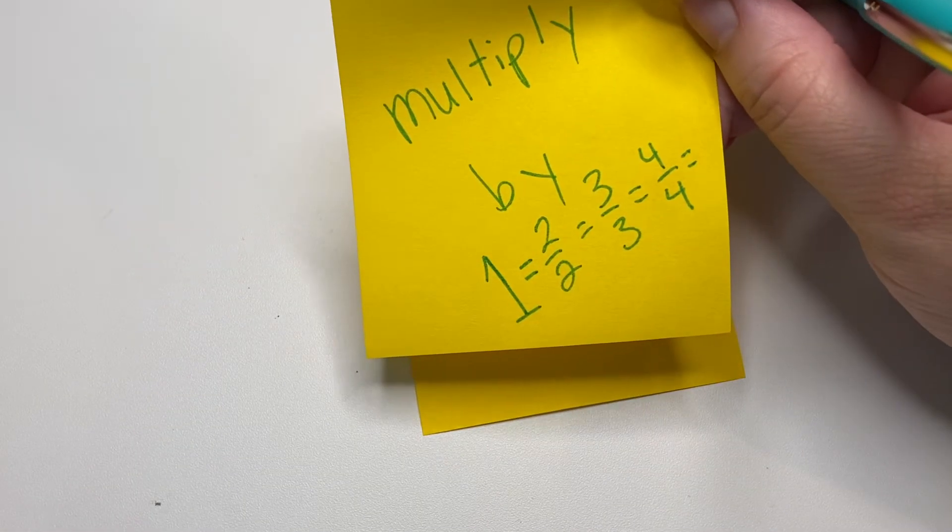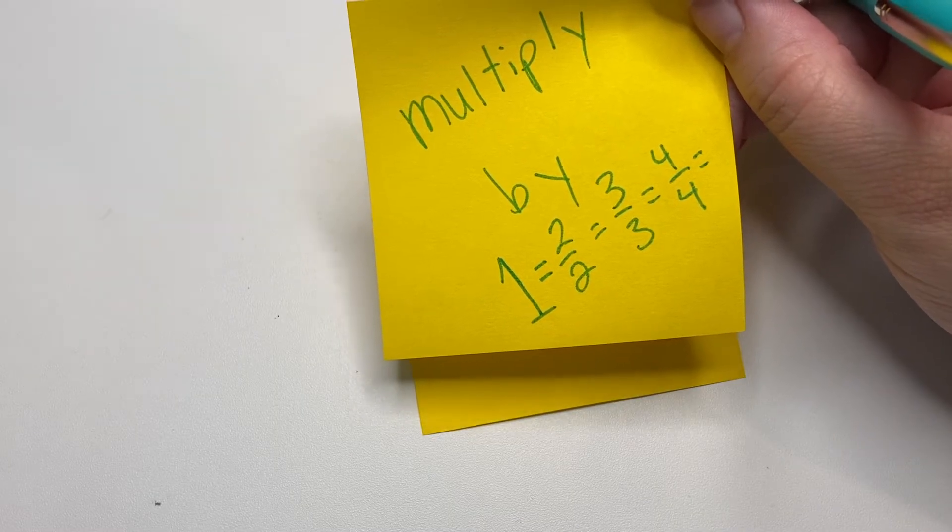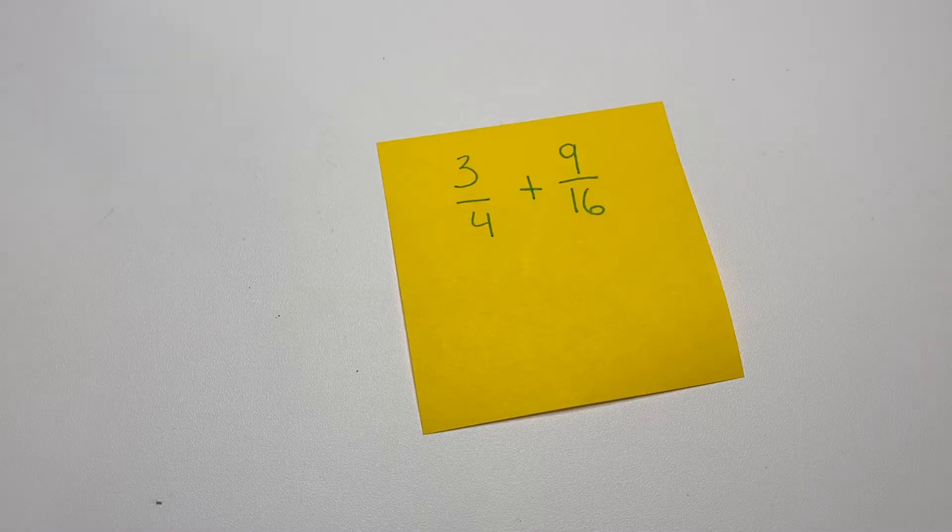But remember there's all these other ways to say 1: 2 over 2, 3 over 3, 4 over 4, all of those things mean 1.